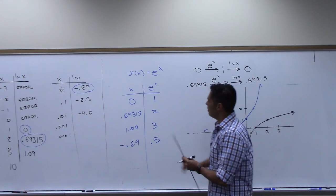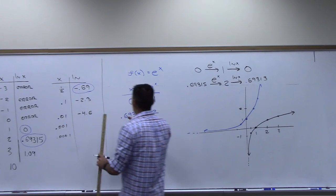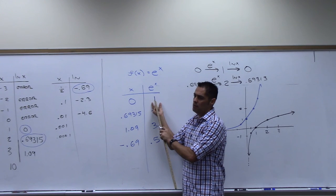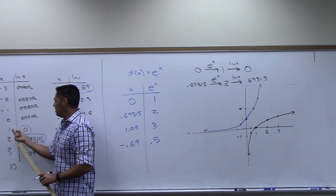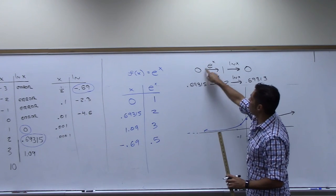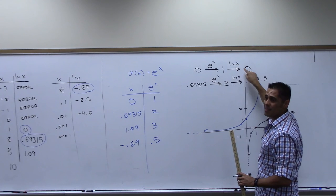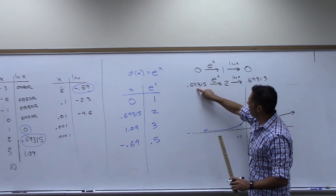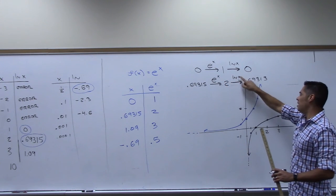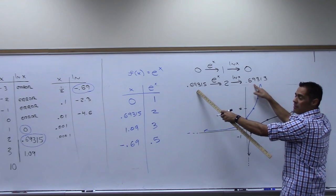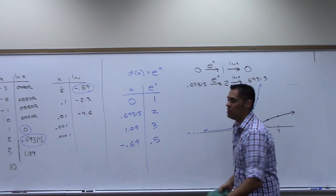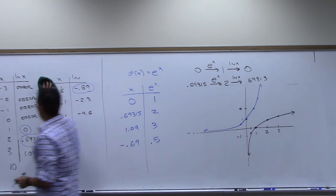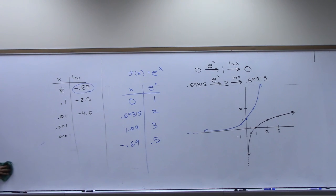These two functions are completely different but related. If I plug 0 into e it spits out 1. If I take that answer and plug it into the natural log, it sends it back to 0. So you start with 0, goes through the e function, comes out as 1, send that through the natural log function, it sends it back to 0. Send 0.69315 through the e function — comes out as 2. Send it through the natural log — comes back as 0.69315. So these two functions undo each other. Whenever that happens we call them inverses.